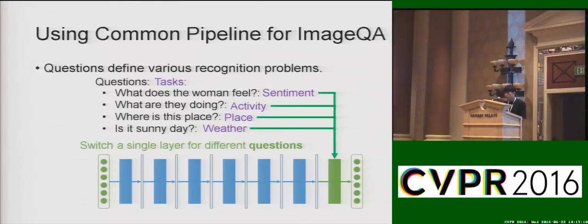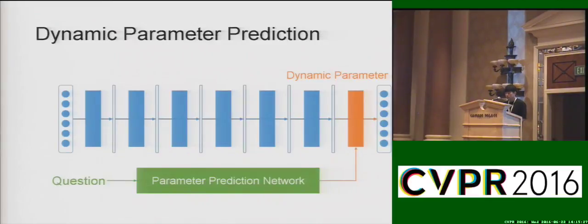Our approach for image question answering is based on this common pipeline. As the recognition problem in image question answering is determined by a given question, the pipeline can be applied to image question answering by switching a single layer within the convolutional neural network for each different question. For this purpose, we introduce a dynamic parameter layer, which is a fully connected layer whose weights are dynamically determined by a given question. More specifically, the weights are determined by a parameter prediction network in the form of regression based on the feature extracted from a given question.